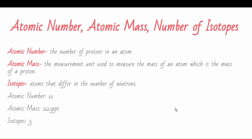Isotopes are atoms that differ in the number of neutrons. The atomic number is 11. The atomic mass is 22.990 in three isotopes.